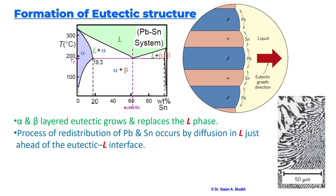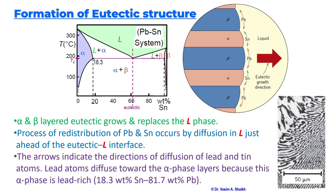The process of redistribution of lead and tin occurs by diffusion in the liquid just ahead of the eutectic and liquid interface. There is a redistribution happening of lead and tin, and diffusion is the dominant mechanism — migration happens by diffusion, and all these lead and tin atoms get migrated towards favorable conditions, forming the different phases. The arrows indicate the direction of diffusion of lead and tin atoms. Lead atoms diffuse towards the alpha phase layers because the alpha phase is lead-rich, and all the tin atoms move towards the beta phase which is tin-rich.